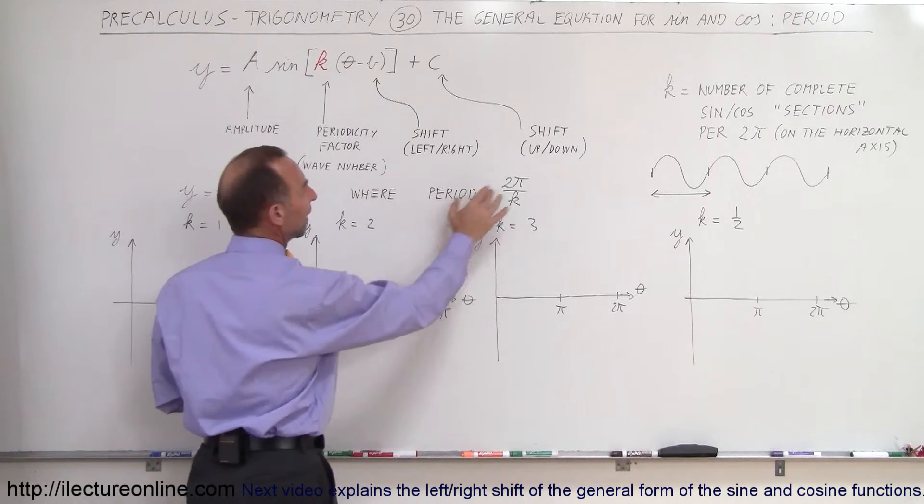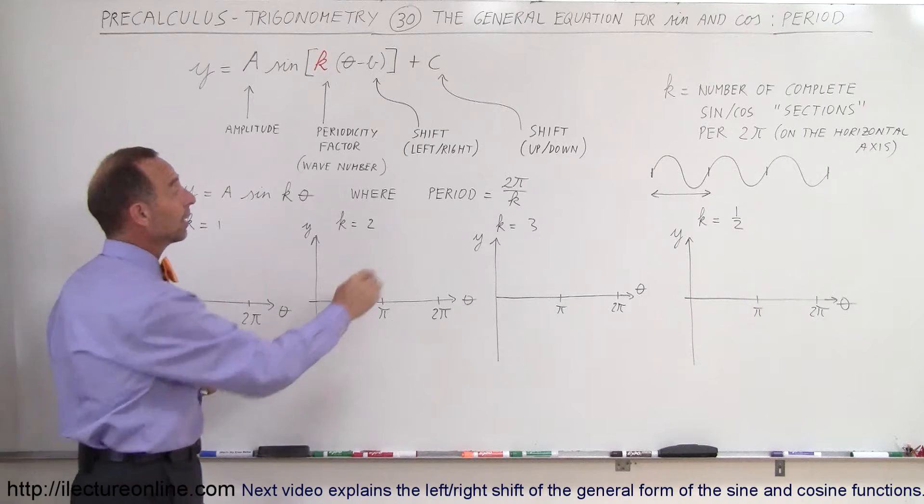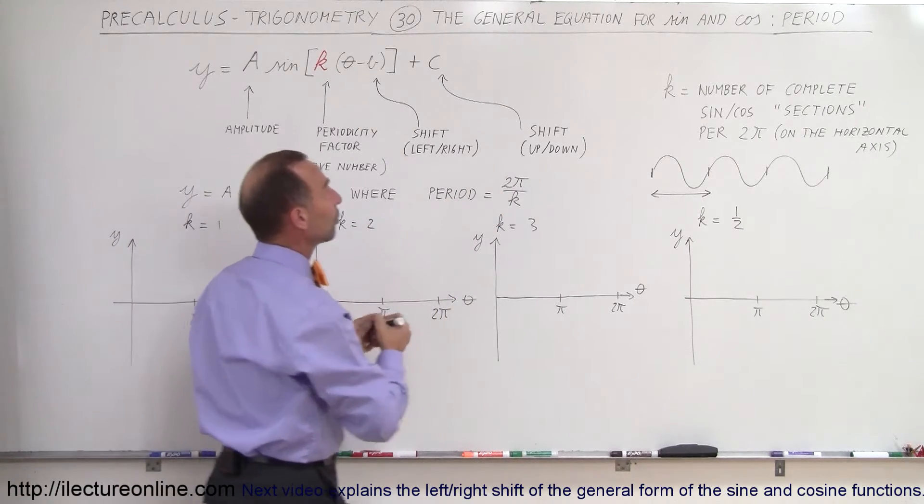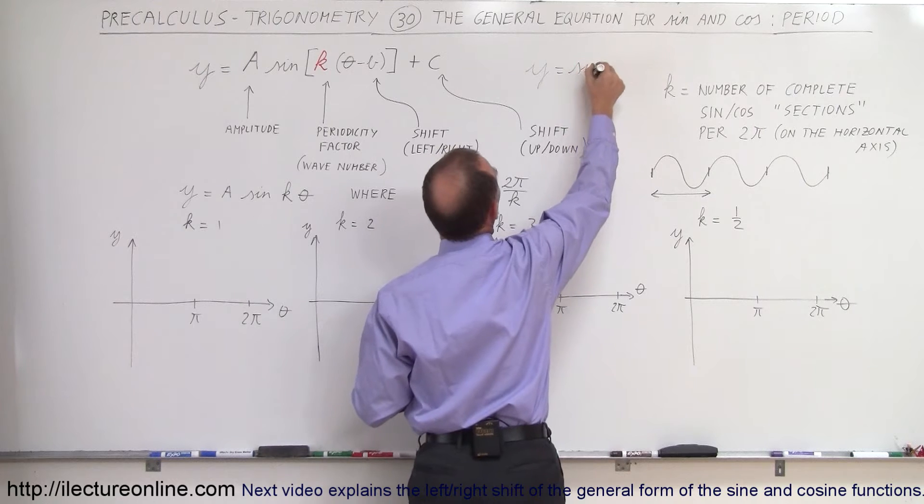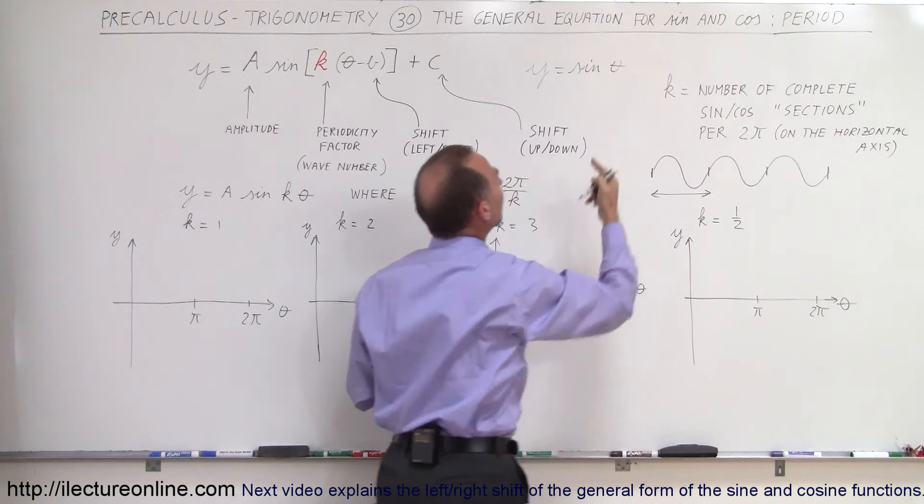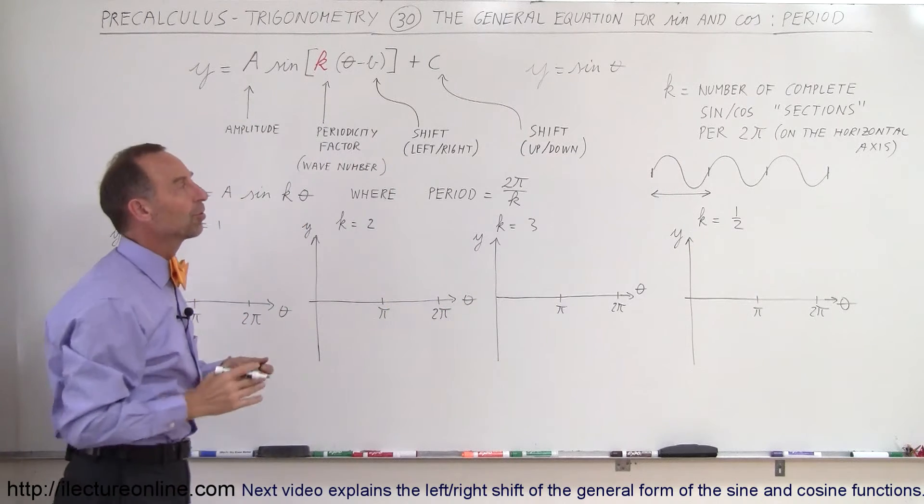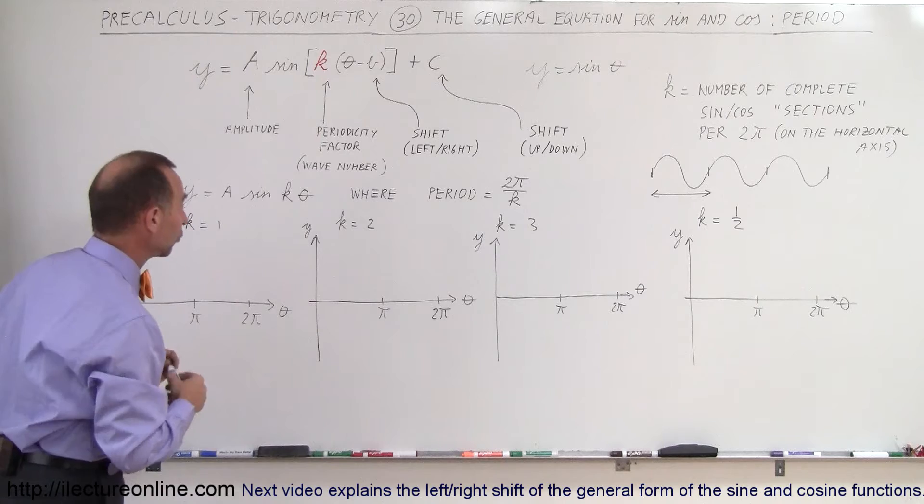So the period can be defined as 2π divided by k. And of course, if k is equal to 1, then the period is 2π. That would come when we have an equation that says y is equal to the sine of θ. So k times θ, k would be 1, and so you get the normal sine function or cosine function that you're familiar with when k is equal to 1.